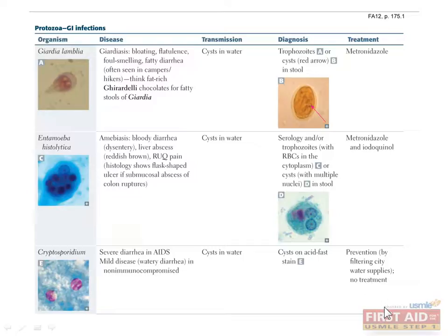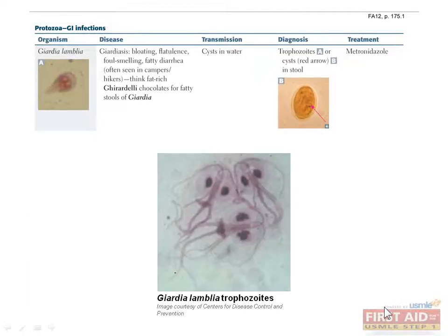The first category includes protozoa that affect the GI system by causing diarrhea. This group includes Giardia lamblia, Entamoeba histolytica, and Cryptosporidium. The first protozoan is Giardia lamblia, a single-celled parasite. Giardia lamblia has a prominent ventral sucking disc and flagella that provide a characteristic appearance, as shown here.